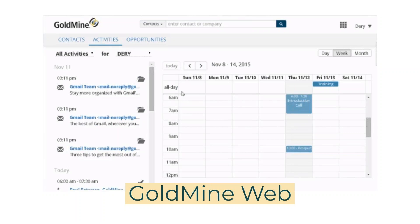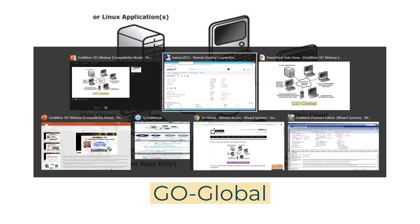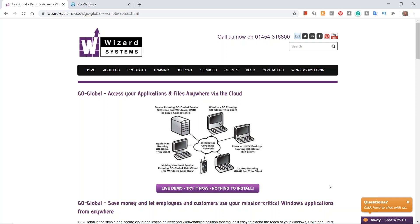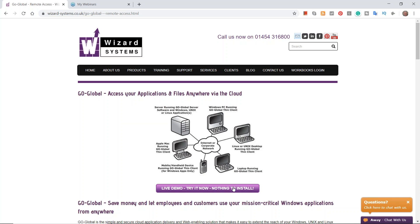Option number three is a solution that is not specific to Goldmine — it can be used across any of your network or Windows applications. It's a simple, low-cost piece of software that we can supply called GoGlobal. GoGlobal is sold on a license basis. You put it on your server and it will allow you to access your Windows application via your browser or tablet, just like you're physically in the office. We do have a very quick demonstration of that on our website. Here's our website and I've gone to our products page — in the 'other' category we've got GoGlobal Remote Access. There's a live demo, instant demo, nothing to install — just click on that.